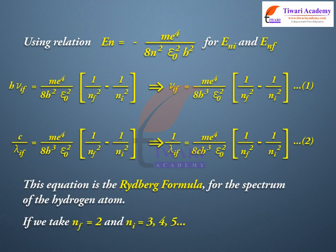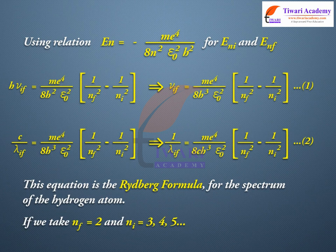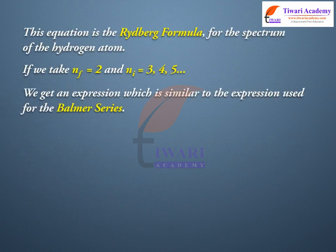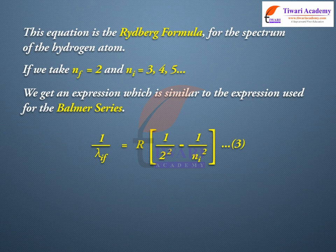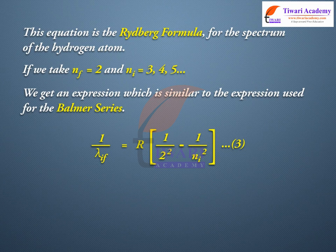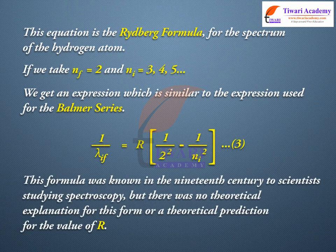If we take nf = 2 and ni = 3, 4, 5, and so on, we get an expression which is similar to the expression used for the Balmer series: 1/lambda_if = R * [1/2^2 - 1/ni^2], equation 3.